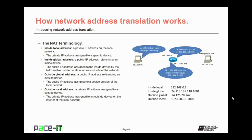Now let's talk about NAT terminology, specifically about the types of addresses. We begin with the inside local address, which is a private IP address on the local network — it is the private IP address assigned to a specific device. Then there's the inside global address, a public address referencing an inside device. The inside global address is the public IP address assigned to the inside device by the NAT-enabled router, allowing access outside of the network.